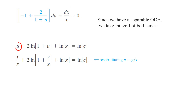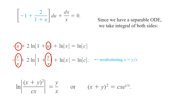So negative u, which is basically y over x, plus 2 ln of the absolute value of (1 plus y over x), plus ln of the absolute value of x, equals ln of the absolute value of c. We just re-substitute u equals y over x — wherever we saw u, we use y over x to write the solution in terms of x and y. Simplifying further by combining the logarithms, in implicit form the solution is: (x plus y) squared equals c times x times e to the power of y divided by x.